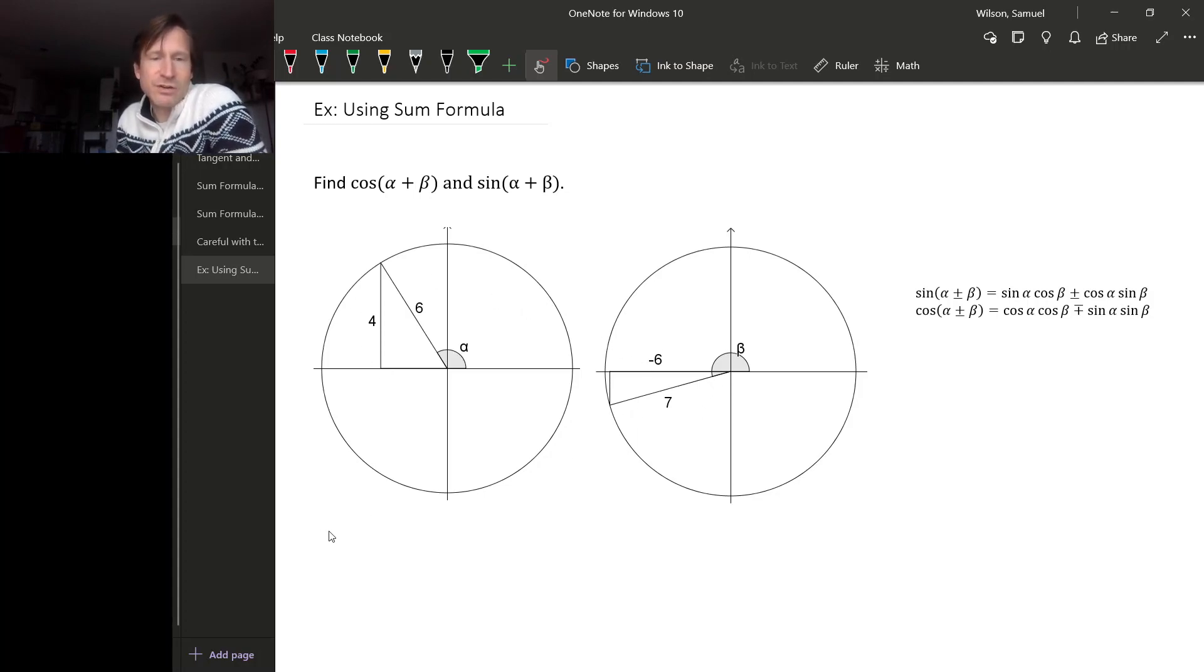So just taking cosine for an example, cos(α + β), using the addition formula for cosine, it's cos(α)cos(β) - sin(α)sin(β).